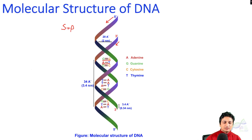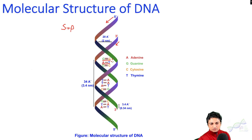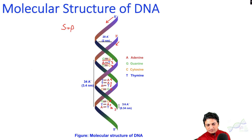One complete turn of the DNA helix is 3.4 nanometers (34 angstroms) in length and contains 10 base pairs. The distance between two consecutive base pairs is 3.4 angstroms (0.34 nanometers). The diameter — the gap between the two strands of DNA — is 20 angstroms.